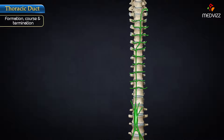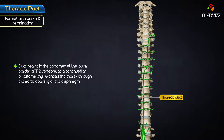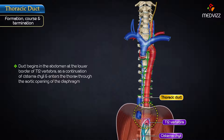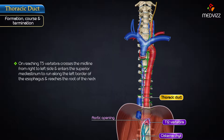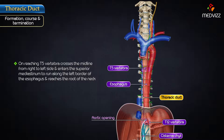Formation, course, and termination. The duct begins in the abdomen at the lower border of the 12th thoracic vertebra as a continuation of the cisterna chyli. It enters the thorax through the aortic opening of the diaphragm. It then ascends in the posterior mediastinum to the right of the midline on the front of the vertebral bodies. On reaching the 5th thoracic vertebra, it crosses the midline from right to left and enters the superior mediastinum to run along the left border of the esophagus and reaches the root of the neck.